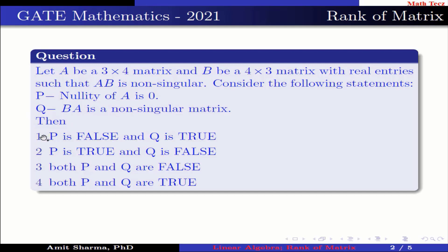Option 1: P is false and Q is true. Option 2: P is true and Q is false. Option 3: both P and Q are false. Option 4: both P and Q are true.